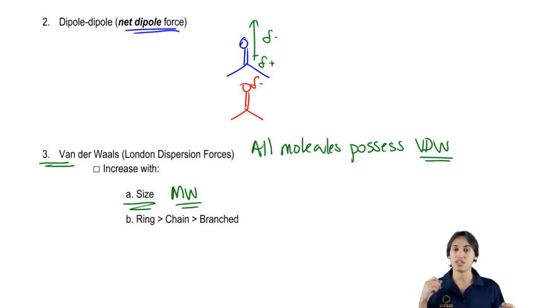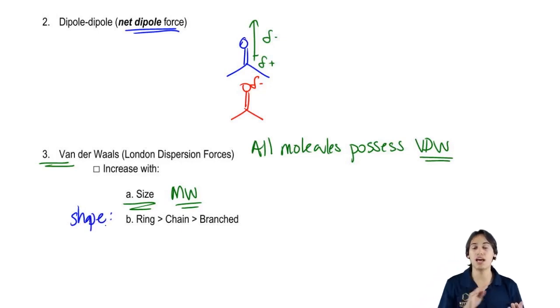Then we've got the second most important thing or the second indicator is going to be the shape, the shape of the molecule. The shape has to do with how neatly they can be arranged and how neatly they can be ordered. So what I'm going to do here is I'm going to draw three different molecules and you tell me which one would have the highest van der Waals force.